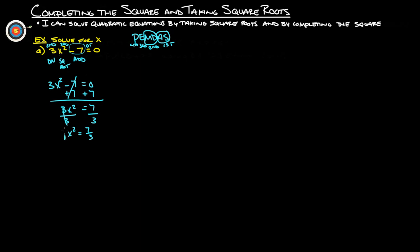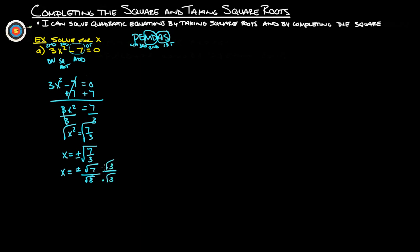Last, we take the square root of both sides. That gives us x equals plus or minus the square root of seven thirds. We can't leave a root in the denominator, so we rationalize it. We rewrite it as root seven over root three, then multiply both top and bottom by root three.